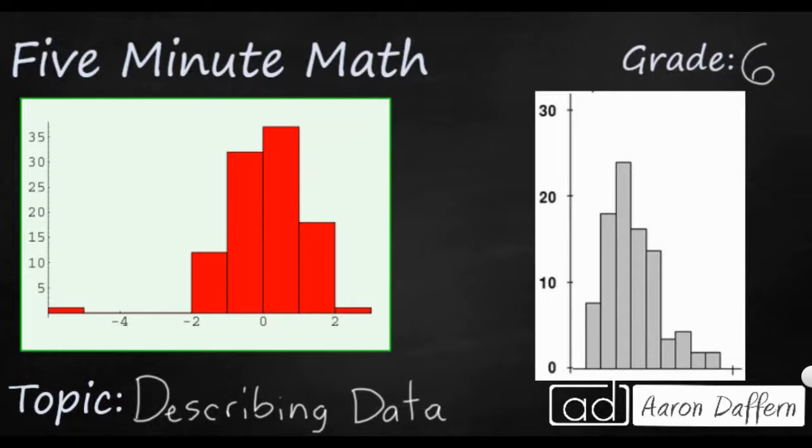So another term that we are going to need to know for sixth grade is the term skewed, because we just looked at some examples of symmetrical data, typically called a bell curve. But this is not what these two bar graphs look like. Rather than having a perfect line, you see that it's all kind of shifted to the right or to the left.